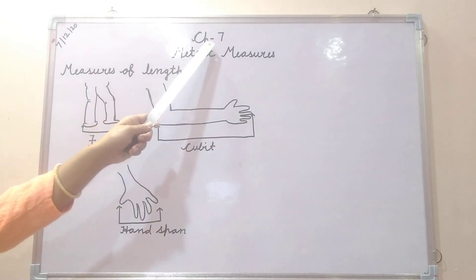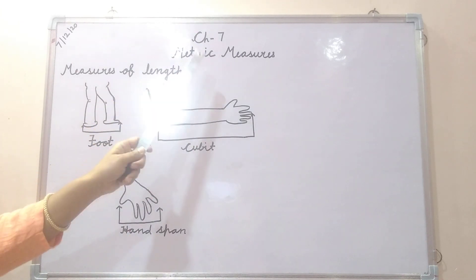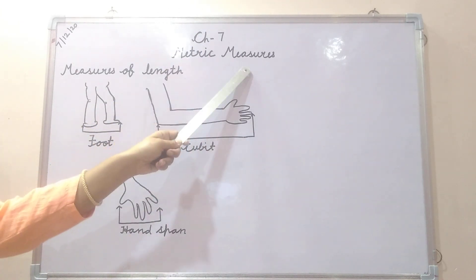Today we will go through chapter number 7 and the chapter is metric measures. In this chapter we are going to learn how to measure length, weight and capacity. So let's begin with the first topic.